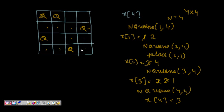We can keep going to find more possible configurations as the loop continues to try other placements. This is how the N-Queens backtracking problem works — we backtrack whenever there is no valid placement. I hope you understand this problem. Please subscribe to the channel and share the video with friends.